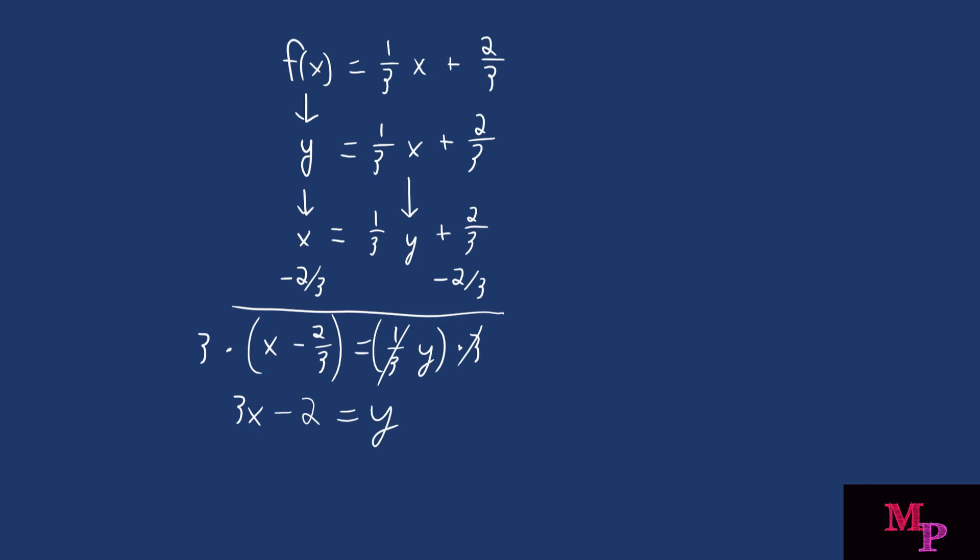So now you want to go ahead and change your y back into function notation. So the notation for inverse function is going to look like this. And that's going to be equal to what you just found, which is three x minus two. And this is going to be your answer for your inverse function.